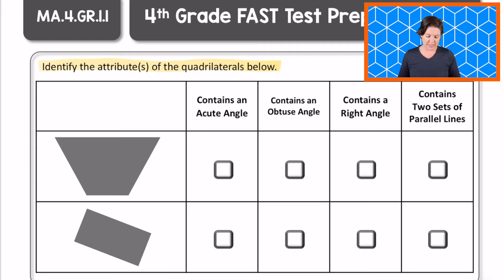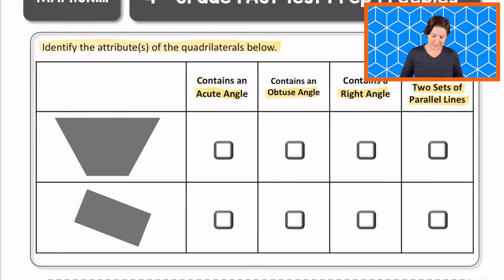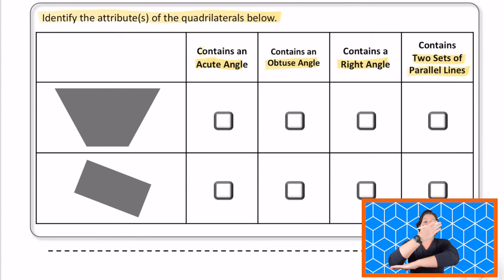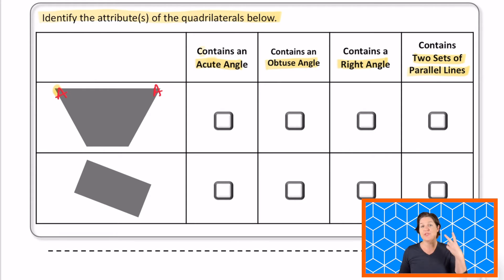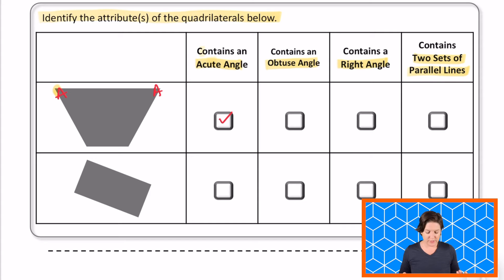So these do have four sides. But what we need to do is see if these quadrilaterals have attributes like containing an acute angle, containing an obtuse angle, containing a right angle, or containing two sets of parallel sides. Does this figure, the top one right here, contain an acute angle? An acute angle is smaller than a right angle. I would take my square corner and measure it against some of those corners to see that, yes, there is an acute angle right here and right here — it actually contains two acute angles. So we can mark contains an acute angle.